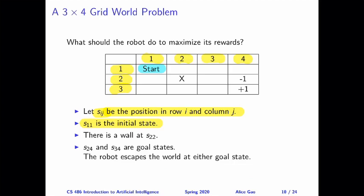We have a wall at S22, represented by an X at that position. Having a wall means the robot cannot get into that square. There are two goal states, S24 and S34. If the robot gets to either goal state, it escapes the world. Think of these as absorbing states—once the robot gets there, that's the end of the process.